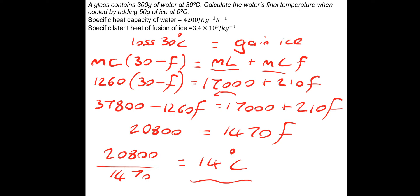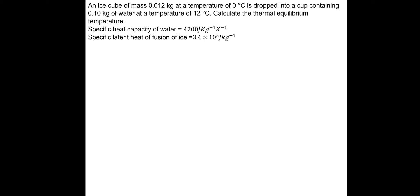I hope those two went okay. If you struggled with that one but you've gone through the examples, I've got another question for you to practice. Pause and have a go, then I'll take you through the answer. An ice cube with mass 0.012 kilograms at a temperature of 0 degrees Celsius is dropped into a cup containing 0.1 kilograms of water at a temperature of 12 degrees Celsius. Calculate the thermal equilibrium temperature.